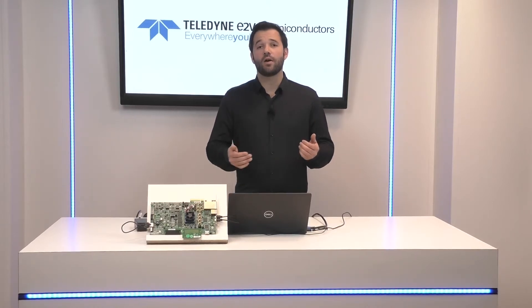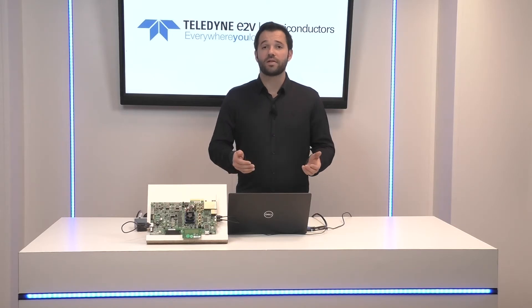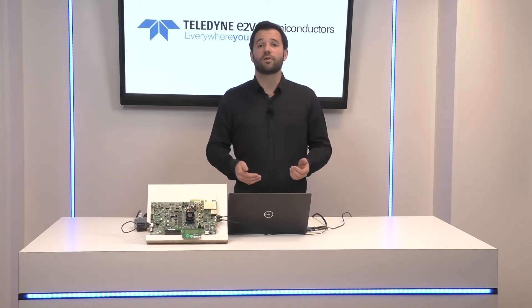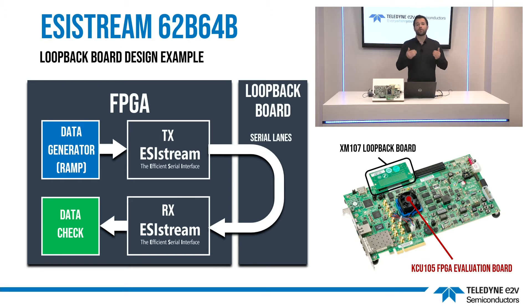Now, let's see how quick and easy it is to start a design with ESIstream 62B64B and the loopback design example already available on the ESIstream website. Here is a quick overview of the design example. In the FPGA, a module generates a ramp pattern and the ESIstream transmitter encodes each data of the pattern in an ESIstream frame ready to be sent through the high-speed serial lane.